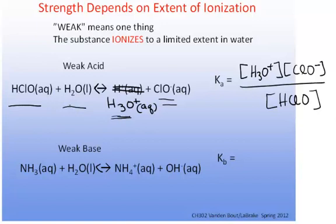The same thing is true for a weak base. Here's a common weak base, ammonia. When placed in water, it ionizes to a limited extent to produce the ammonium ion and the hydroxide anion. And because a base is a proton acceptor, the proton here is being accepted from the water.